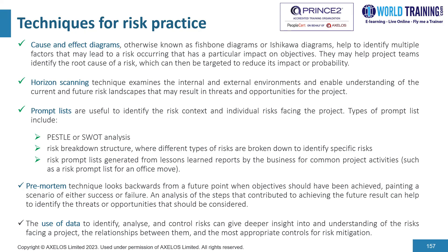Types of prompt list include PESTLE — which stands for Political, Economic, Social, Technological, Legal, and Environmental — and SWOT analysis, where S stands for Strengths, W for Weaknesses, O for Opportunities, and T for Threats. You also have the risk breakdown structure, where different types of risks are broken down to identify specific risks, and risk prompt lists generated from lessons learned reports for common project activities, such as a risk prompt list for an office move.